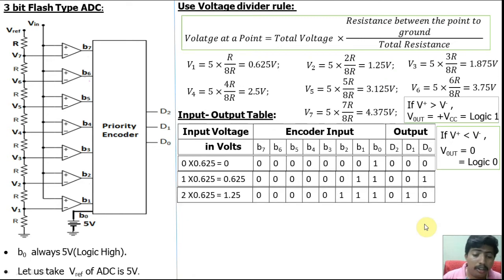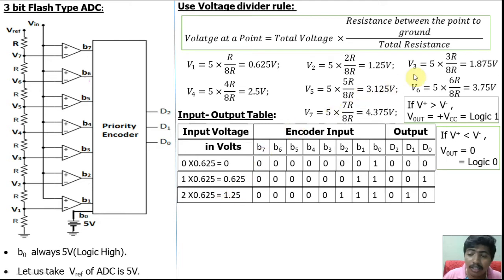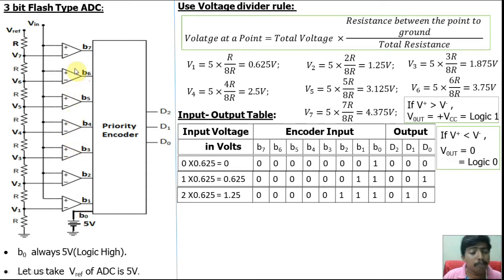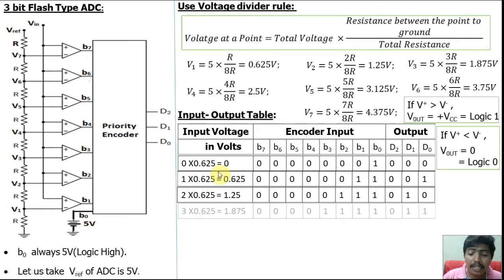When the input exceeds 1.25 volt but is less than 1.875 volt, B0 is 1, V1 is 1, V2 is 1 because V+ is higher than V−, but for V3 through V7 V+ is lesser, so they give logic 0. Similarly, for subsequent input ranges, the outputs continue to increment following the same pattern.